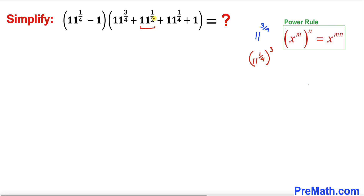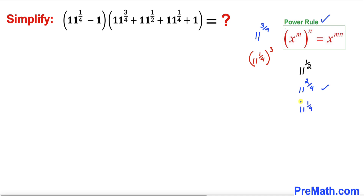Now let's focus on the next term: 11 power 1 over 2. We can tweak its exponent — 1 over 2 could be written as 2 over 4. Applying the power rule, this becomes 11 power 1 over 4, whole squared.